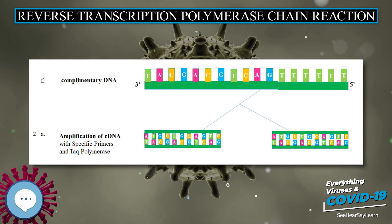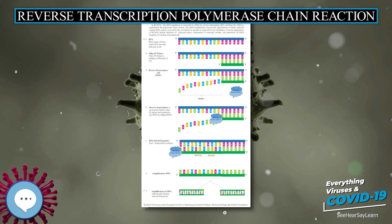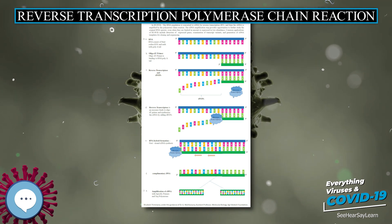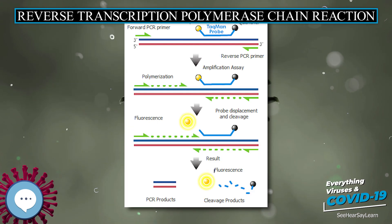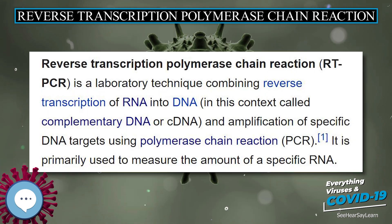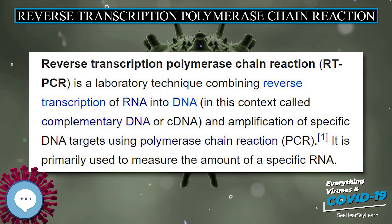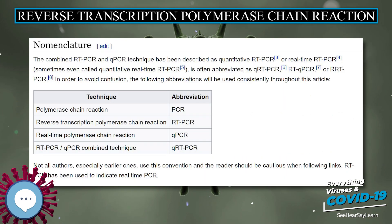Scorpion probes, like molecular beacons, are not fluorescently active in an unhybridized state due to the fluorescent probe on the 5-end being quenched by the moiety on the 3-end of the oligonucleotide. With scorpions, the 3-end also contains a sequence complementary to the extension product of the primer on the 5-end. When the scorpion extension binds to its complement on the amplicon, the scorpion structure opens, prevents FRET, and enables the fluorescent signal to be measured.